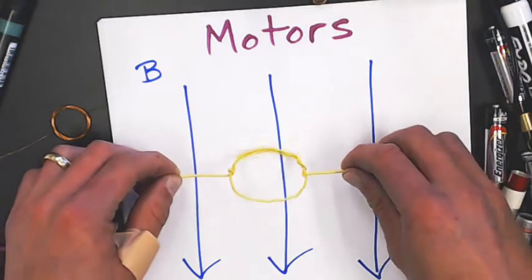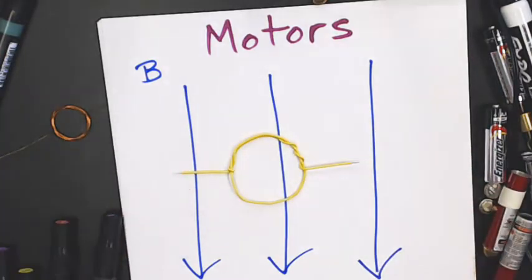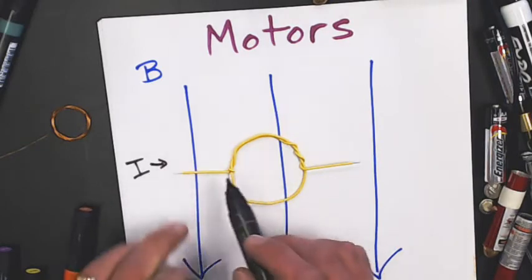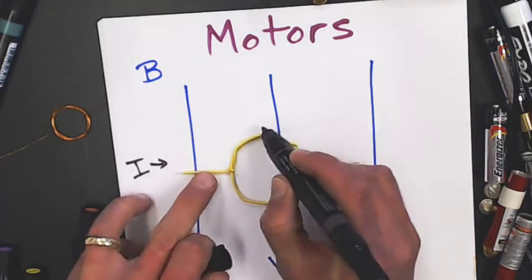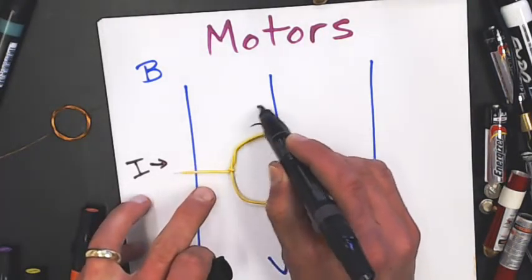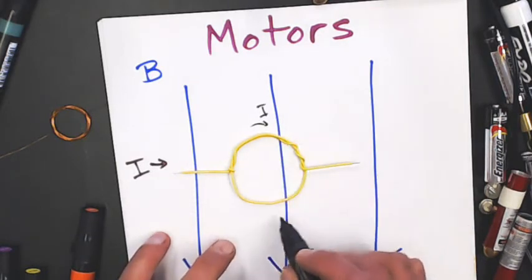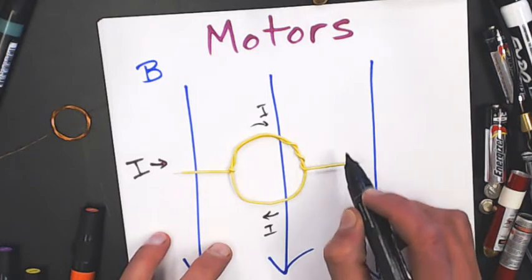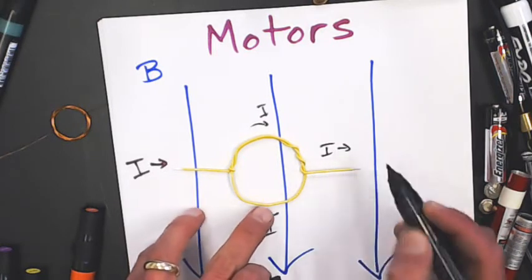I'm going to set it here and I'm going to run some current through it this way. So I'm going to have current flowing this way, so when it gets here it's going to move around that way. And then it's going to come around and then it's going to go out. So the current is moving that way.